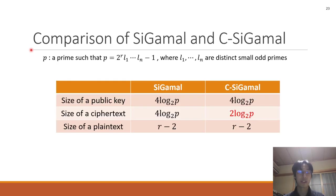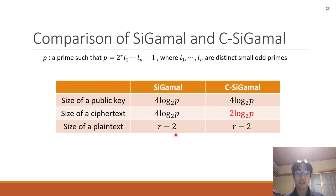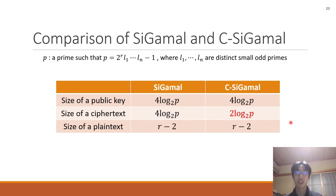Here is a comparison of C-GAMMA and CC-GAMMA. The size of the public key in C-GAMMA and CC-GAMMA are the same — it is 4 log_2(p). The sizes of the plaintexts are also the same; it is r_2. But there is a difference in the size of the ciphertext. The size of the ciphertext in C-GAMMA is 4 log_2(p), but the size of the ciphertext in CC-GAMMA is 2 log_2(p). So CC-GAMMA is a compressed version of C-GAMMA. And this is the construction of C-GAMMA and CC-GAMMA.